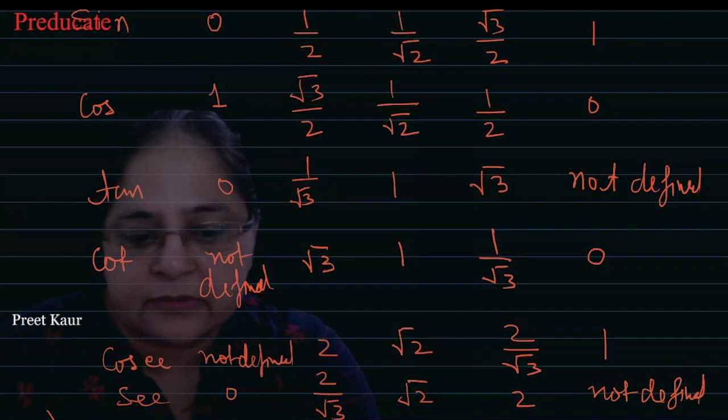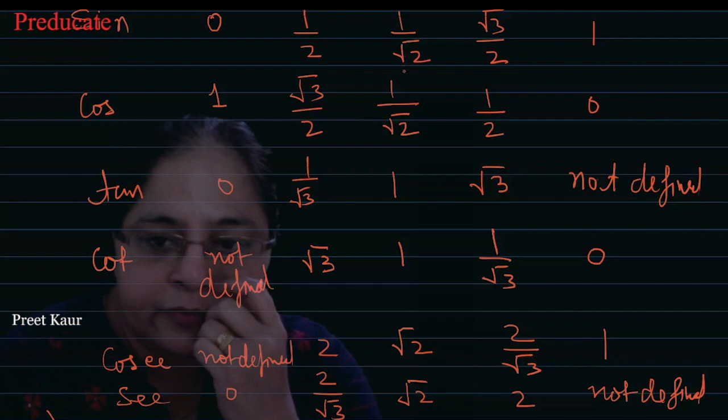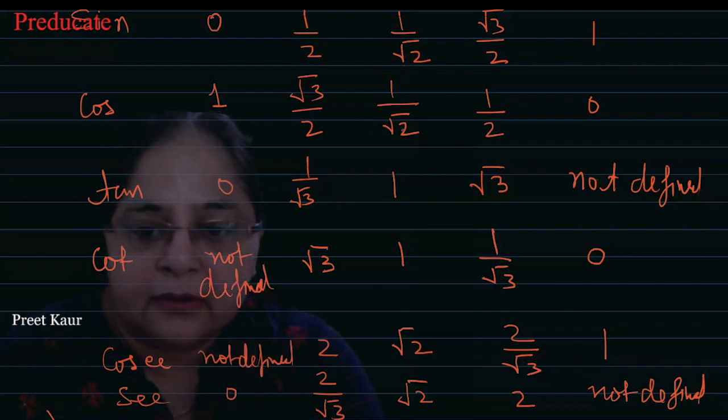Okay students. So cos and sine values at 45 degrees are the same. Tan value at 45 degrees is 1. And cosec and sec values at 45 degrees are the same. And one more thing.